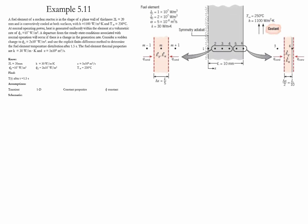Example 5.11. In this example, a fuel element of a nuclear reactor has the shape of a plane wall of thickness 2L. It is cooled by convection at both sides with a given convection coefficient and T-infinity. At normal operating conditions, it has a uniform heat generation of 10 to the 7. However, there was a departure from steady state conditions which increased the heat generation to 2 times 10 to the 7. We need to use the explicit finite difference method to determine the temperature of the fuel element after 1.5 seconds.